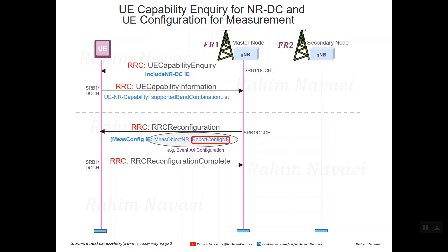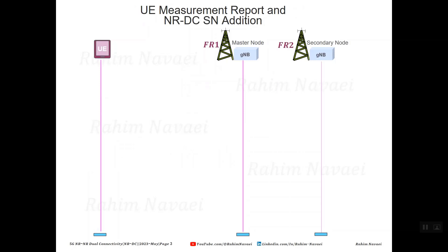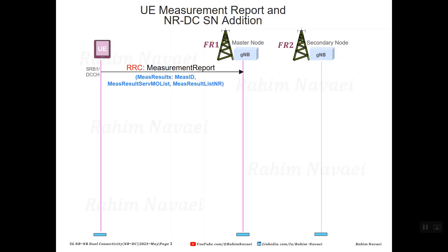The device then sends back an RRC reconfiguration complete message in response to the RRC reconfiguration message to the master gNB. When the device finds an FR2 cell that satisfies the A4 measurement criteria, the UE sends an A4 measurement report to the master gNB (master node).